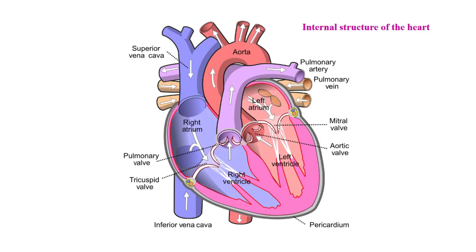You are observing the main blood vessel which originates from the left ventricle — that is the aorta. And the blood vessel originating from the right ventricle is the pulmonary artery. This is the pulmonary artery and this one is the aorta. Here the aortic valve is present, this one is the pulmonary valve — four valves.